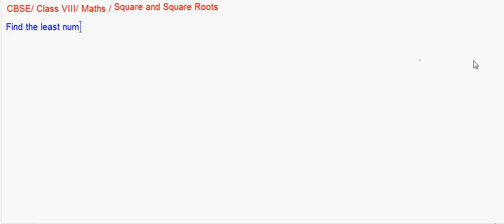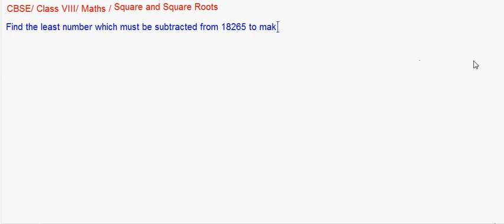It says: find the least number which must be subtracted from 18265 to make it a perfect square. That means this number in itself is not a perfect square. If you subtract a certain number, which we need to calculate, it will make the resulting number a perfect square.